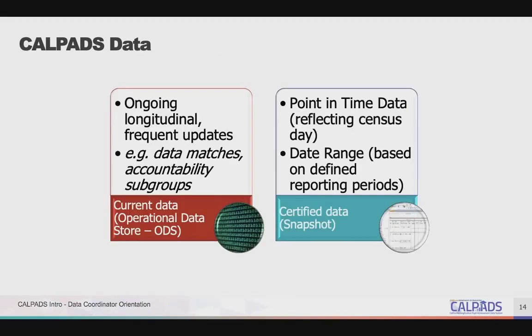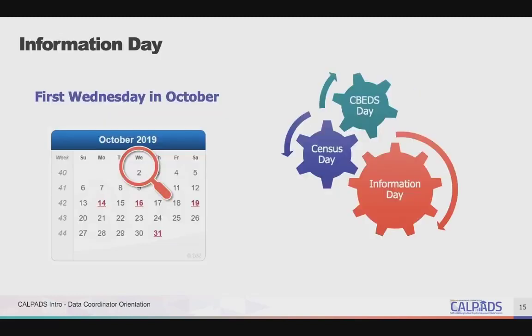CALPADS reflects two different types of data. The current data in the Operational Data Store, or ODS, is what is in CALPADS at any given time. It reflects the frequent ongoing updates and is used for reporting, data matches, the four-year graduation cohort, loading into the assessment system, and for generating accountability indicators and subgroups. The certified data, or snapshot data, reflect either a specific point in time, like Census Day, or a specified date range. Information Day is always the first Wednesday in October, and it is also referred to as Census Day.